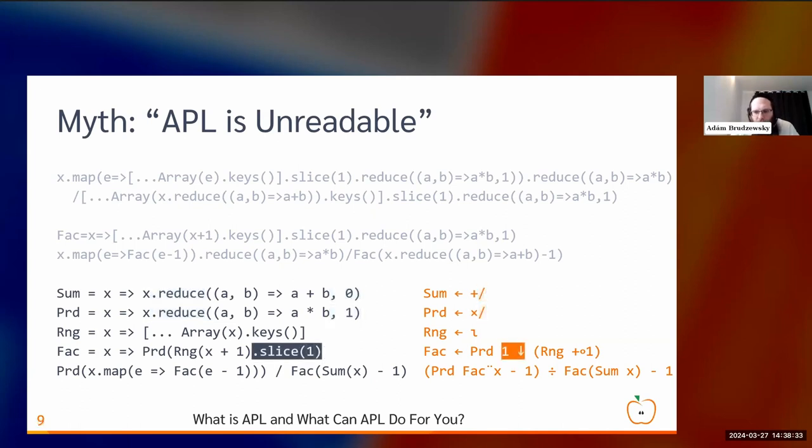We can also see here the slice one, that means we're chopping off the first element. APL uses a down arrow, which is trying to indicate drop. That's what we call it. We drop one element, so we send it down. When you drop something, it falls down.